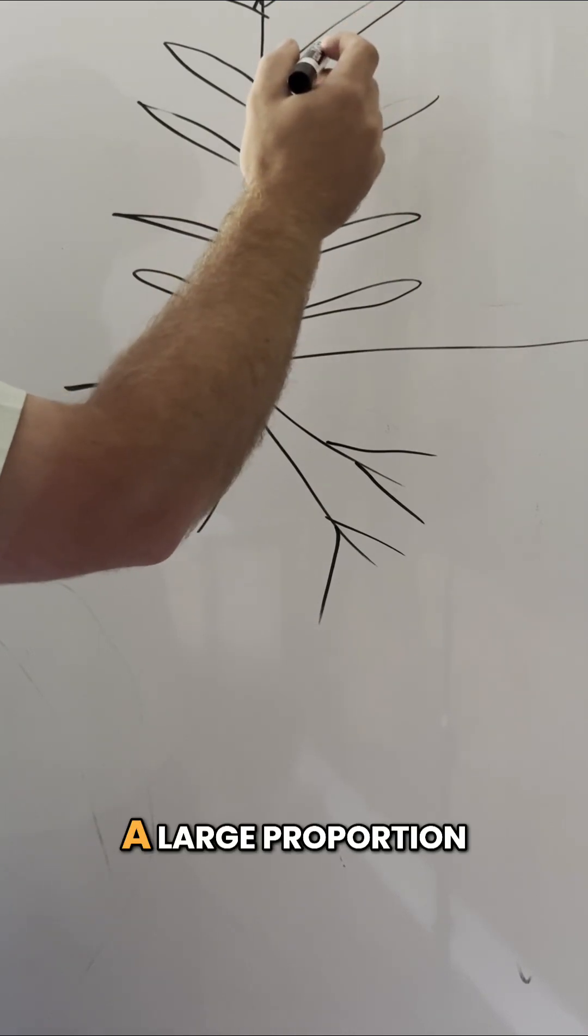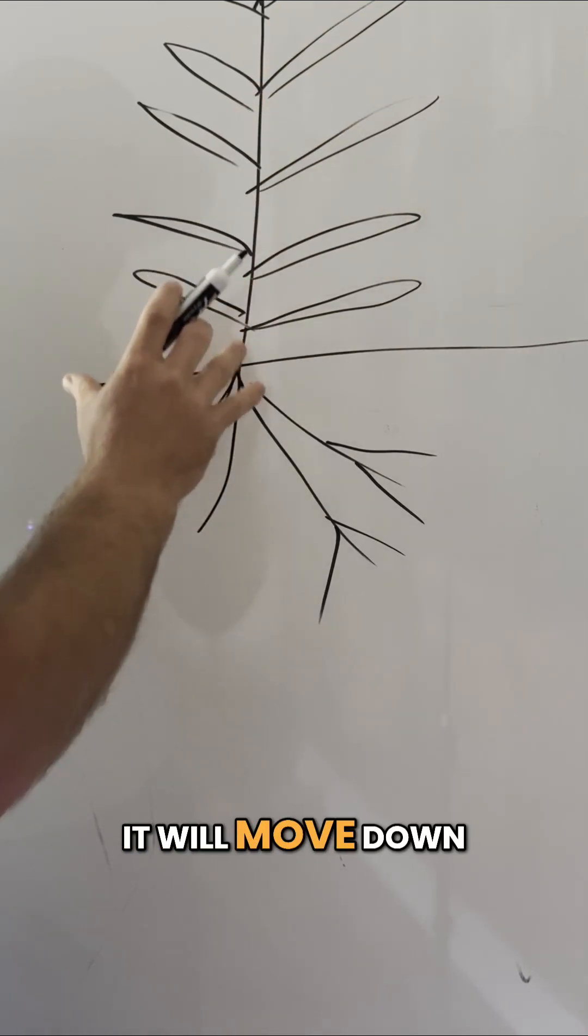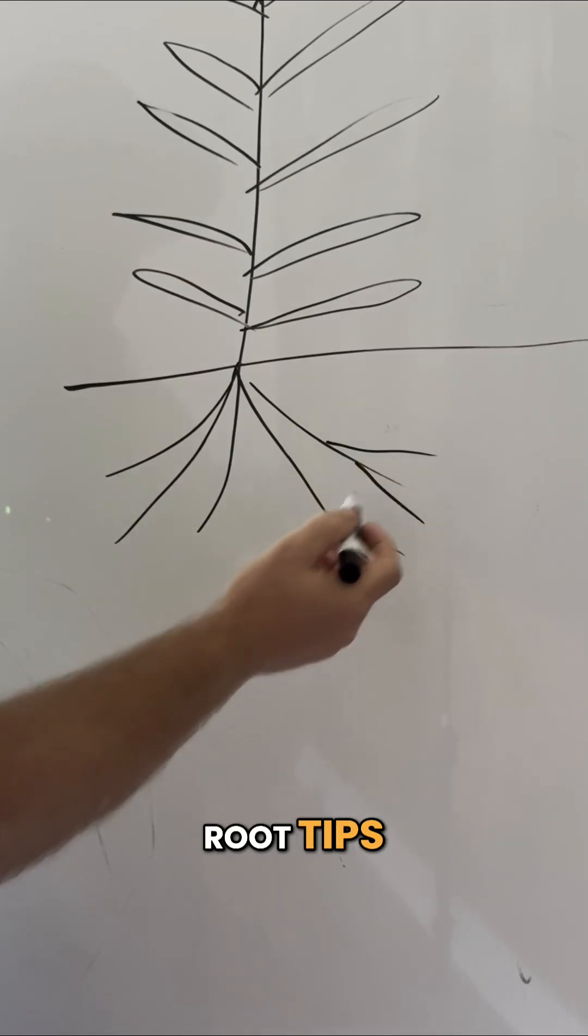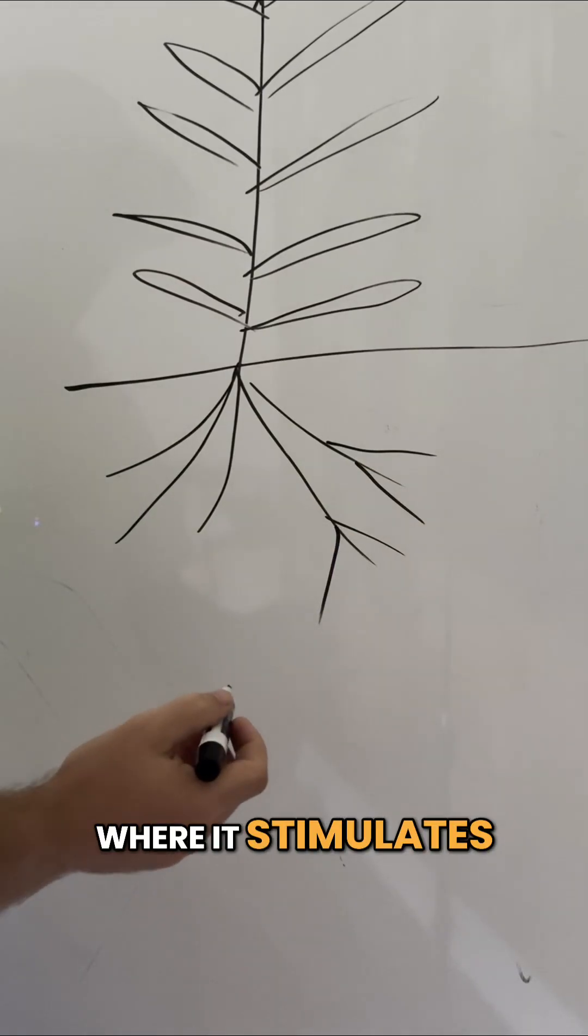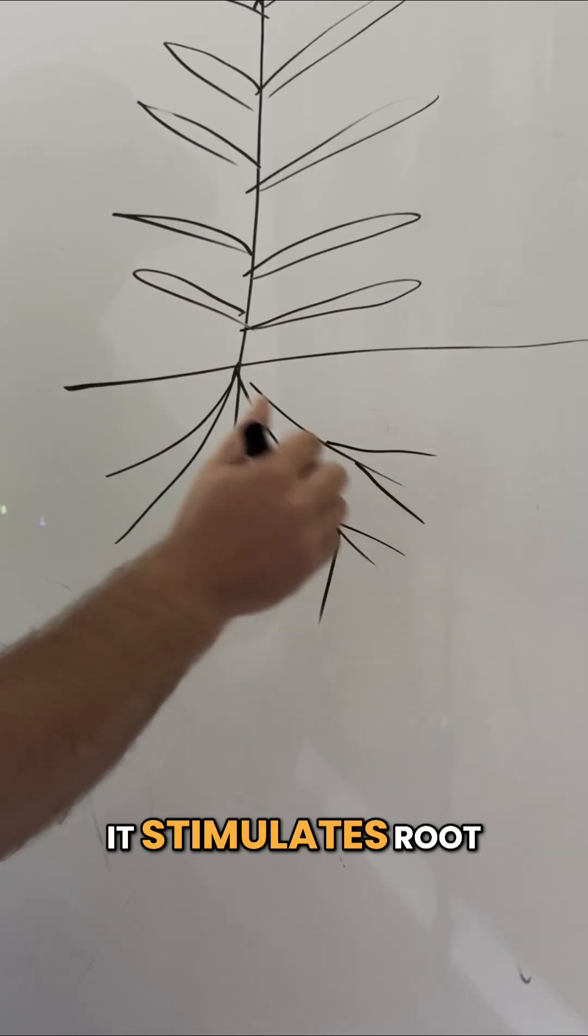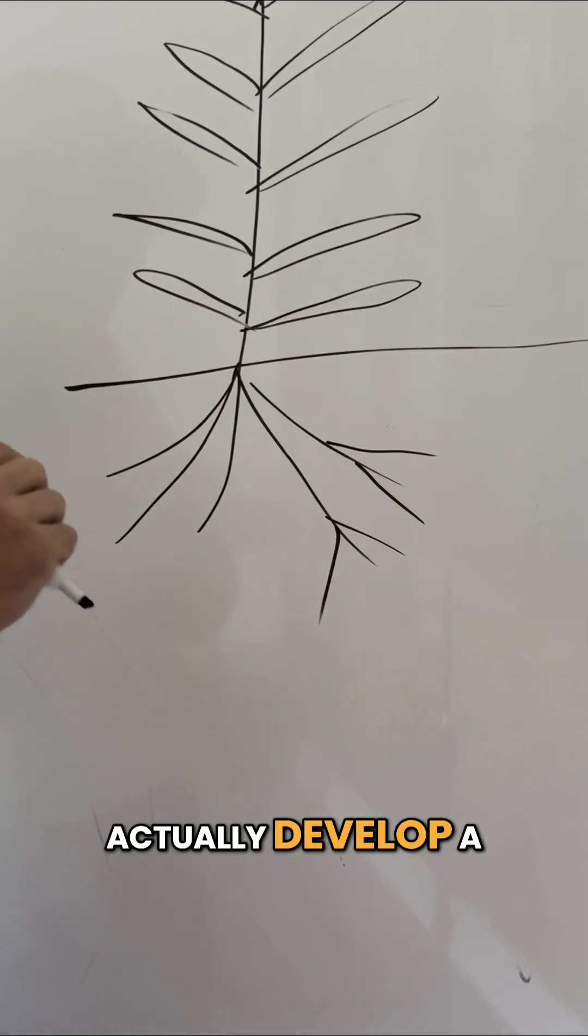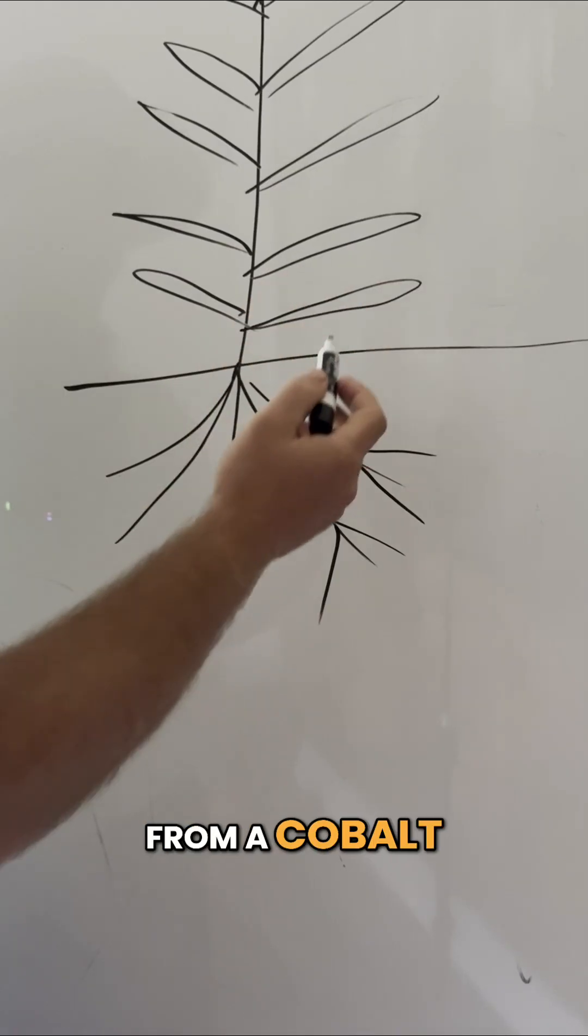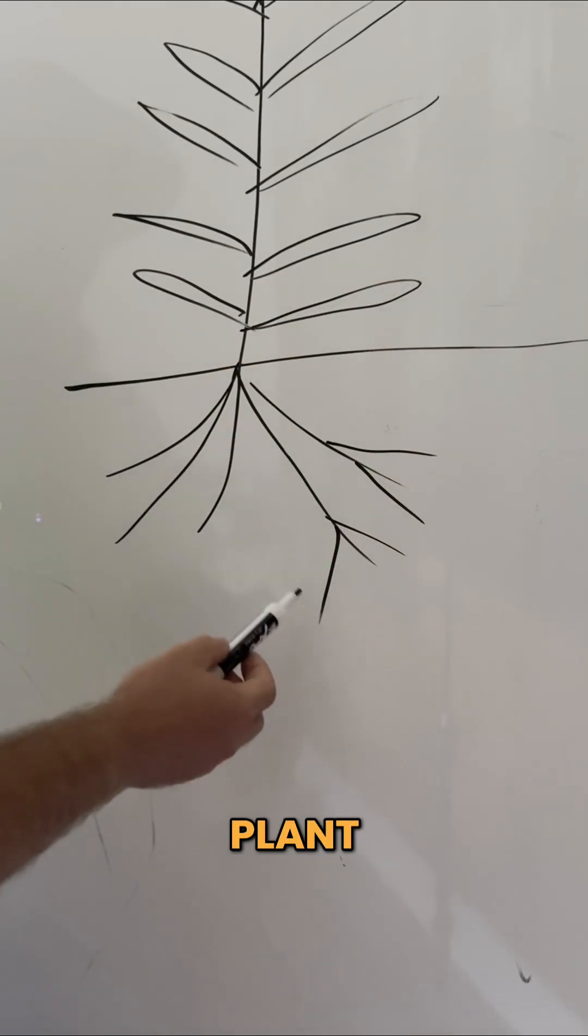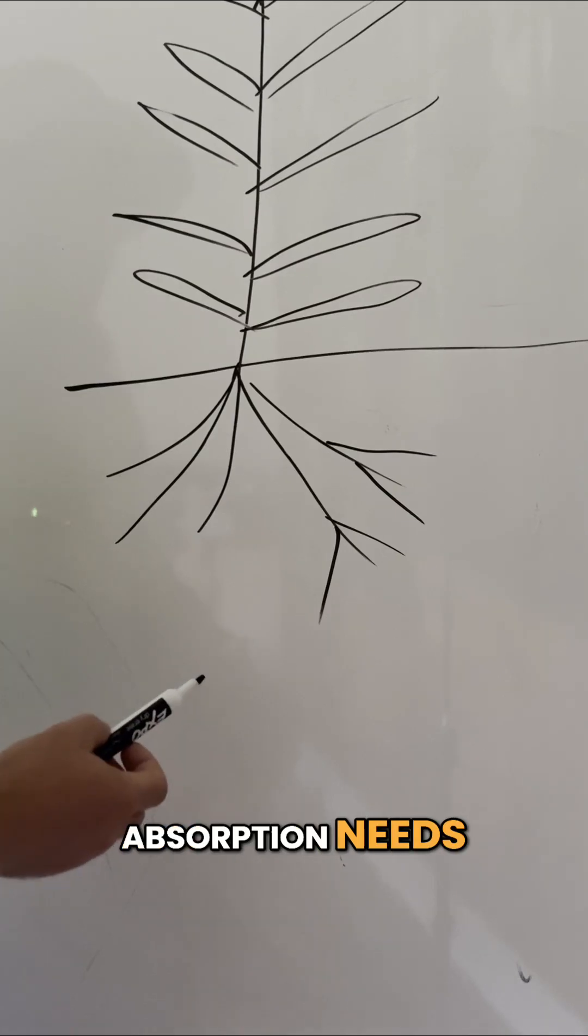A large proportion of it will move down into the root system and out to the root tips where it stimulates cytokinin production and it stimulates root tip progression. So you can actually develop a flush of root growth from a cobalt application right at a time period when this plant has critical nutrient absorption needs.